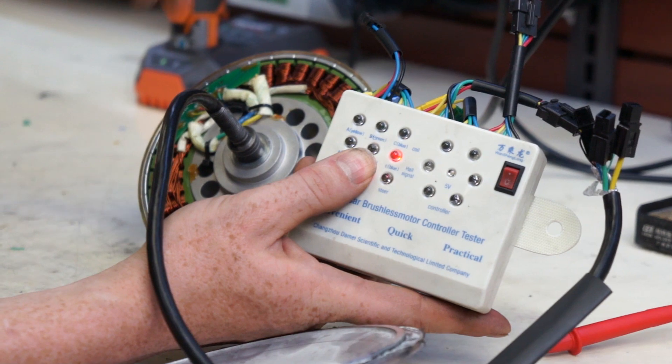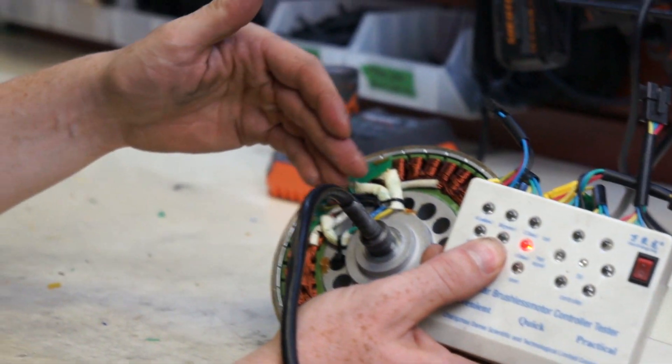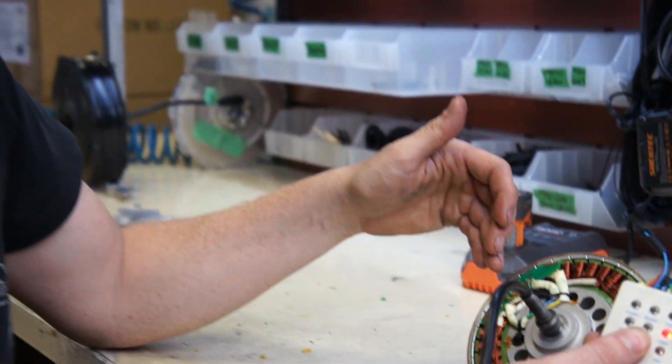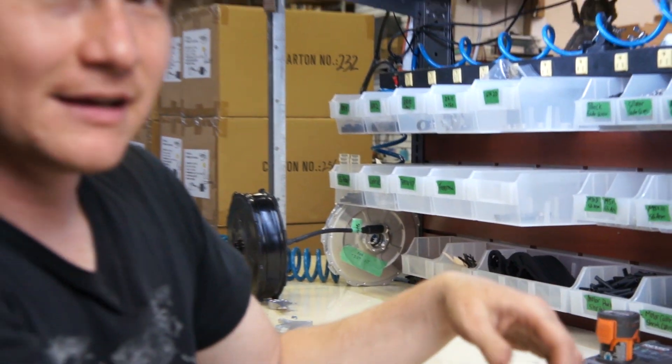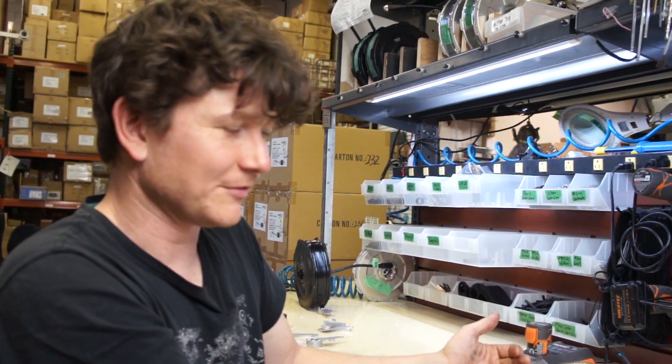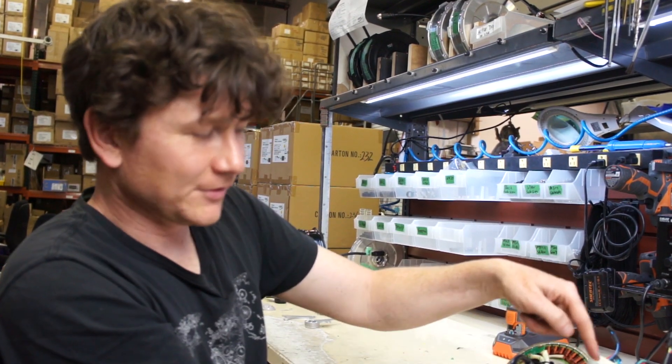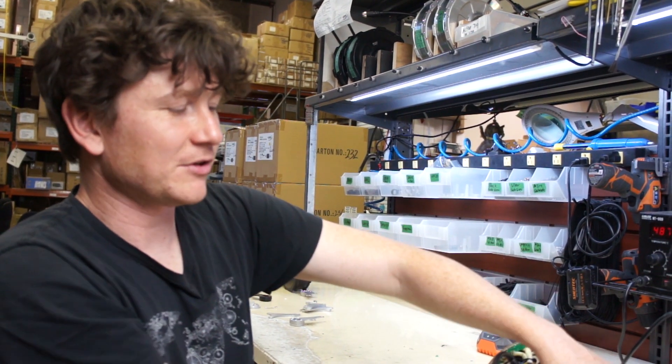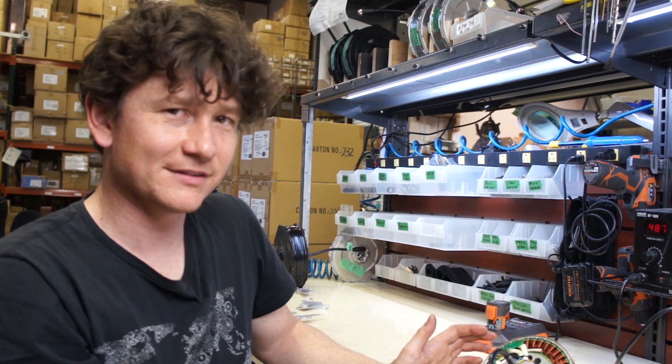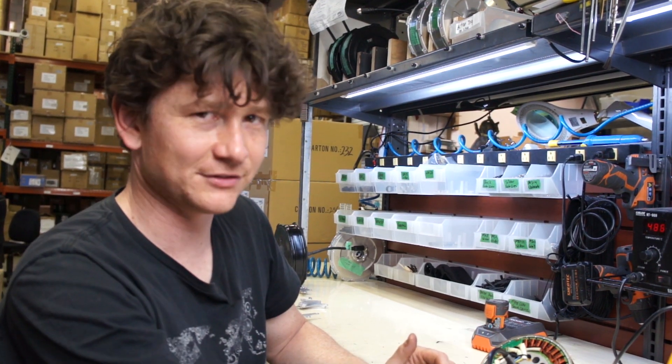That will be the case if there's a break in the wiring, so if one of the wires is severed, but it can also be the case if the hall chip itself has been damaged. Most people don't have a hall tester like this, but you can easily measure the state of the signals just using a conventional multimeter.